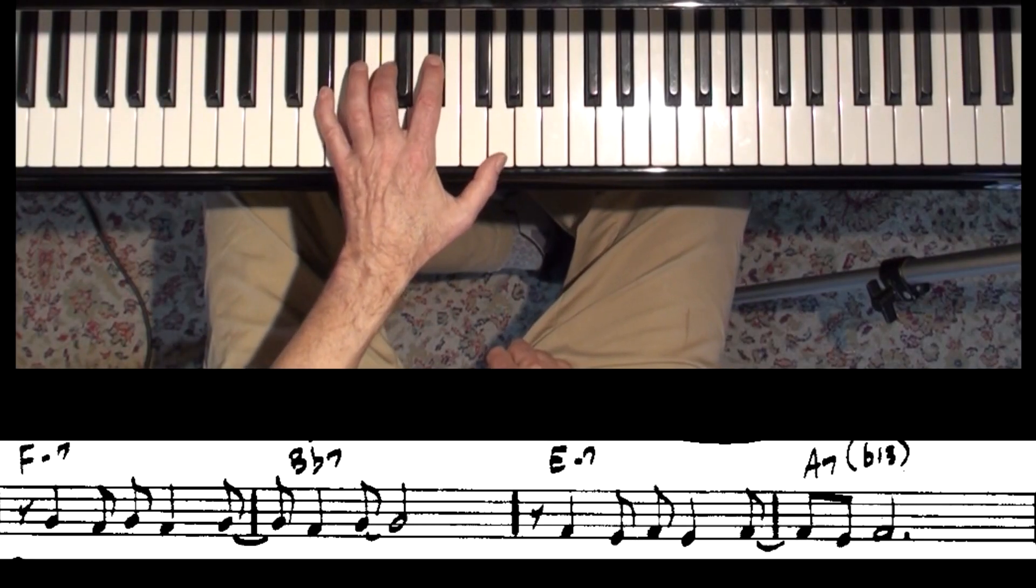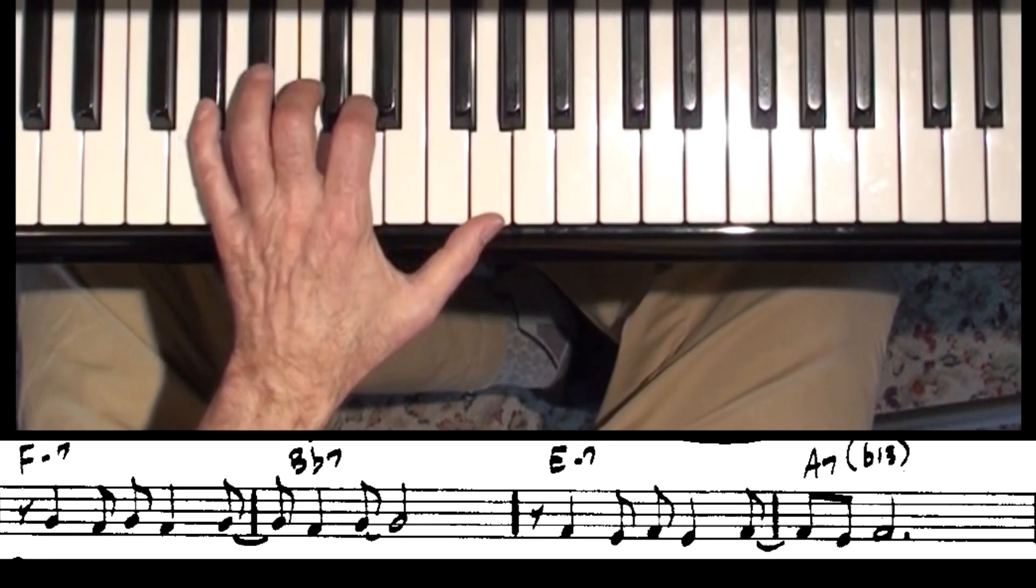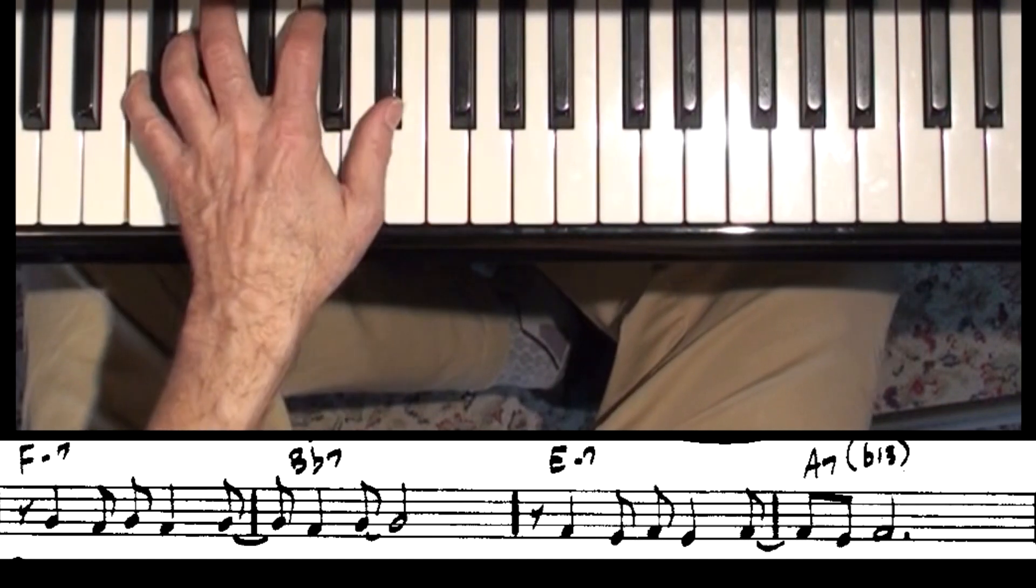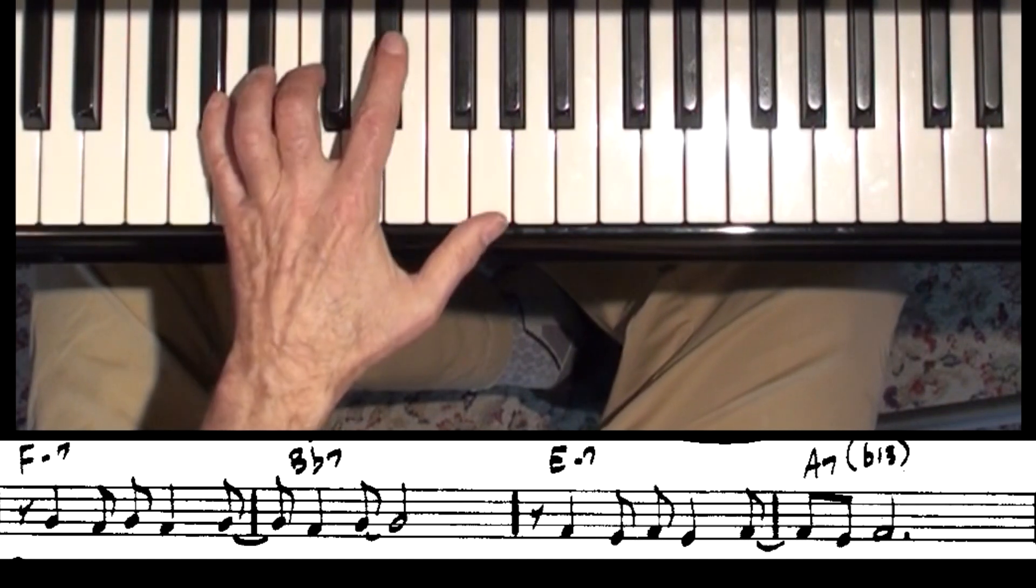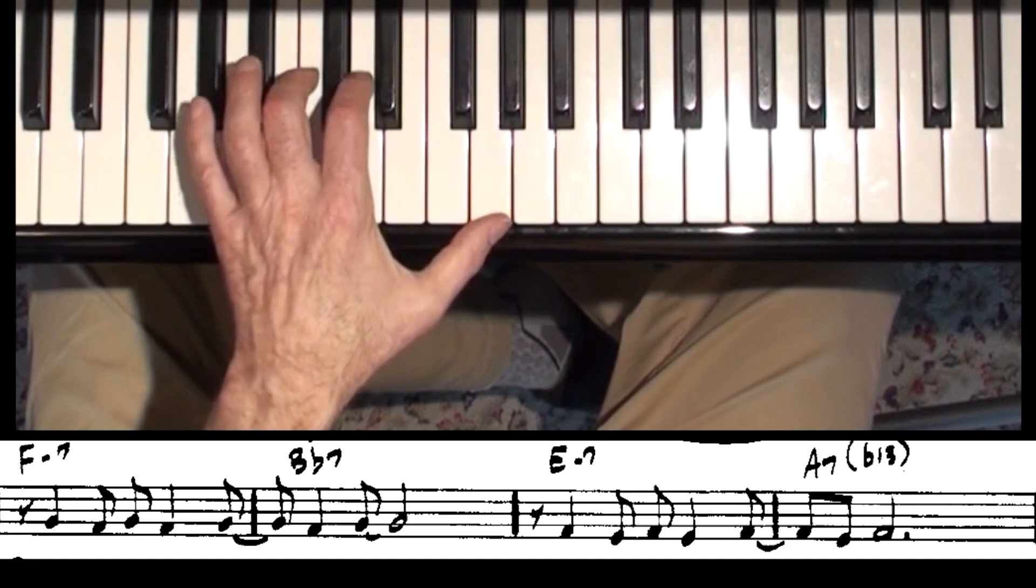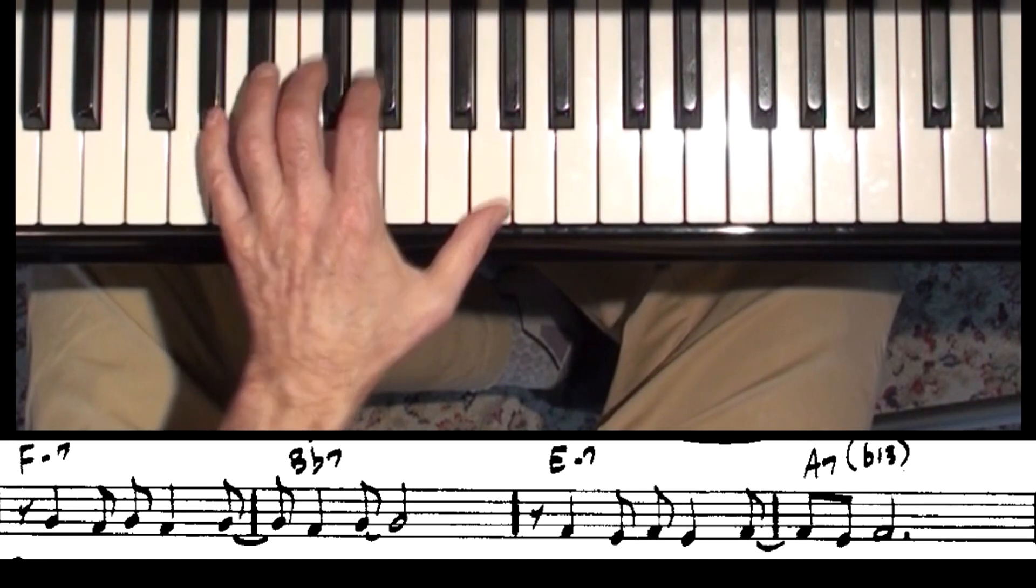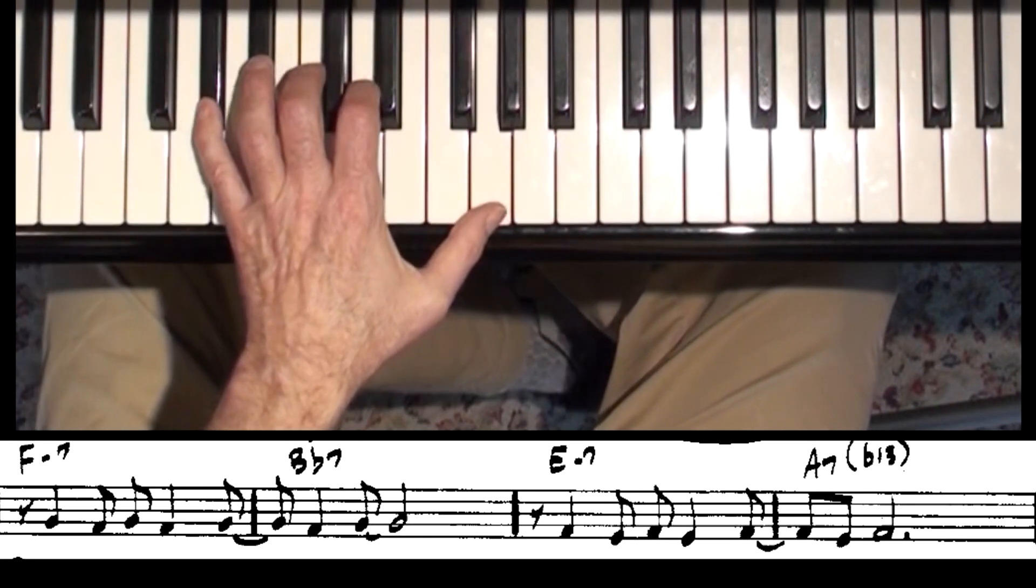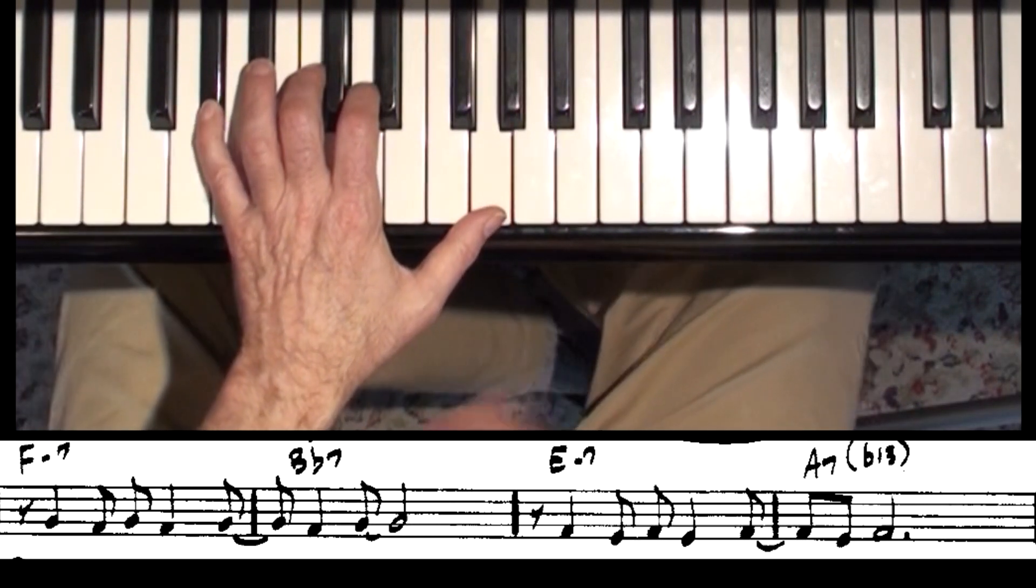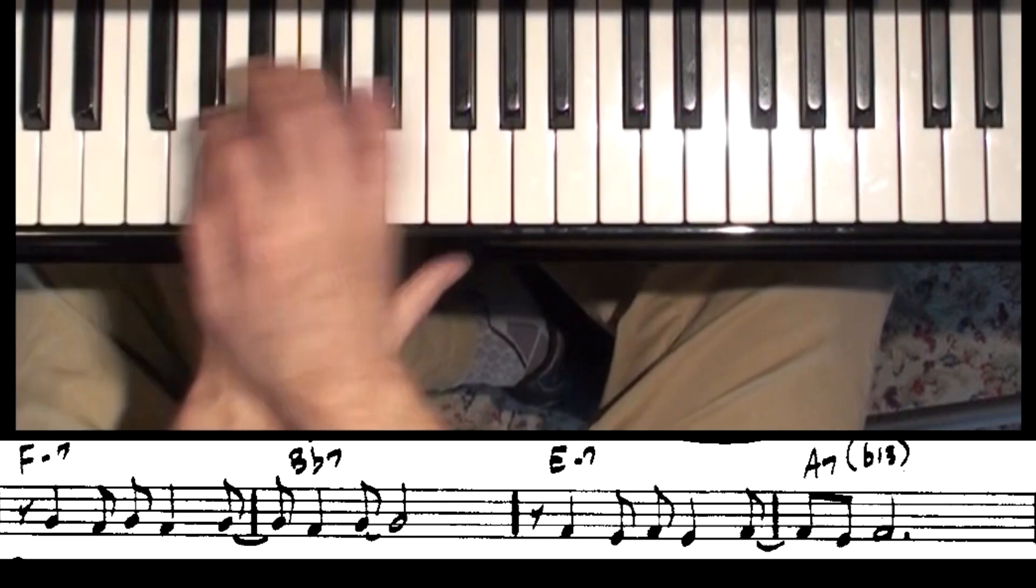So here's F minor 7th as a rootless voicing. And the reason you like to use this particular inversion here is because it goes to box 1 so easily. And there's the shape for box 1. The function is six different chords, maybe more. So here we go.